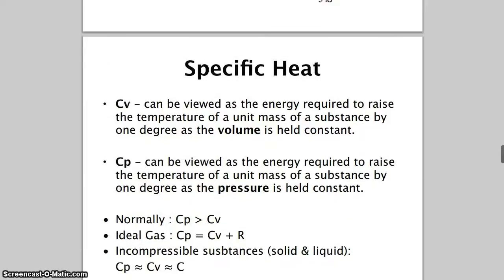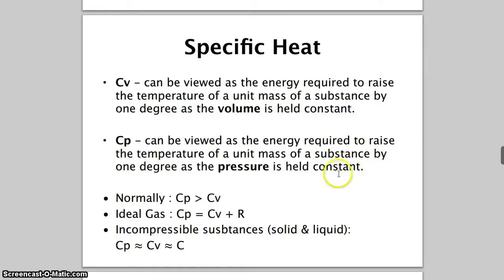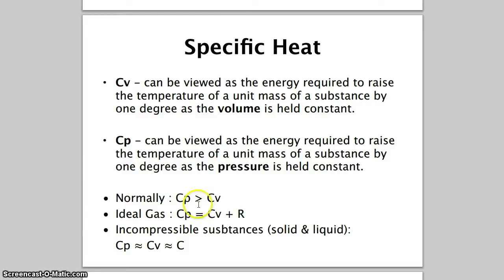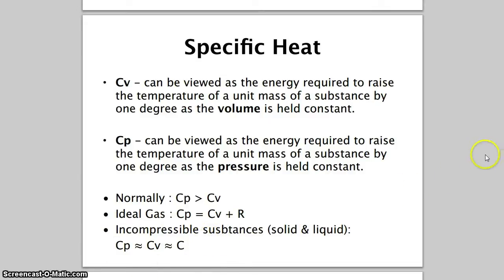There are two types of specific heat. In this chapter, we'll mostly use Cp — the energy required to raise the temperature of a unit mass by one degree at constant pressure. Cp is normally bigger than Cv, but for an ideal gas, Cp equals Cv plus R, where R is a constant. For incompressible substances such as solids and liquids, Cp is equivalent to Cv, so you can use either.